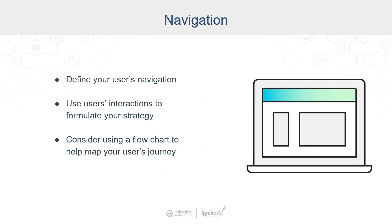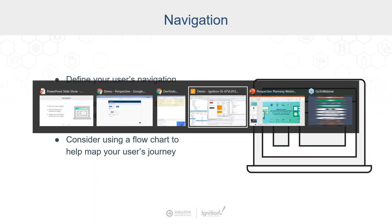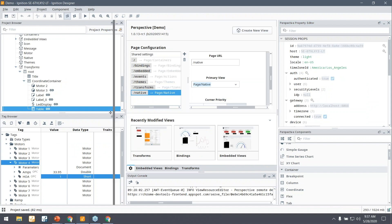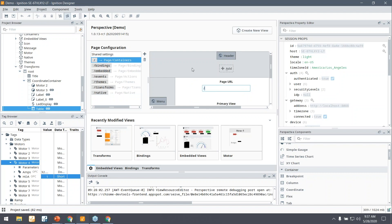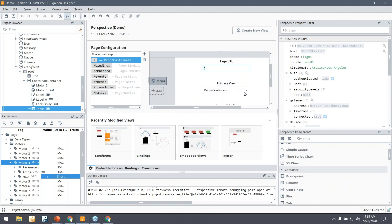The next part of the design planning process is to define your user's navigation. This will help you plan out how users can best navigate your application. I recommend using a flowchart to help map out how a user will navigate through different views and pages. Having a map of your user's journey will help you understand how to best approach navigation for each of the screen sizes defined in your project. With Perspective, when you first get into the application, you define what the first view users are going to see.